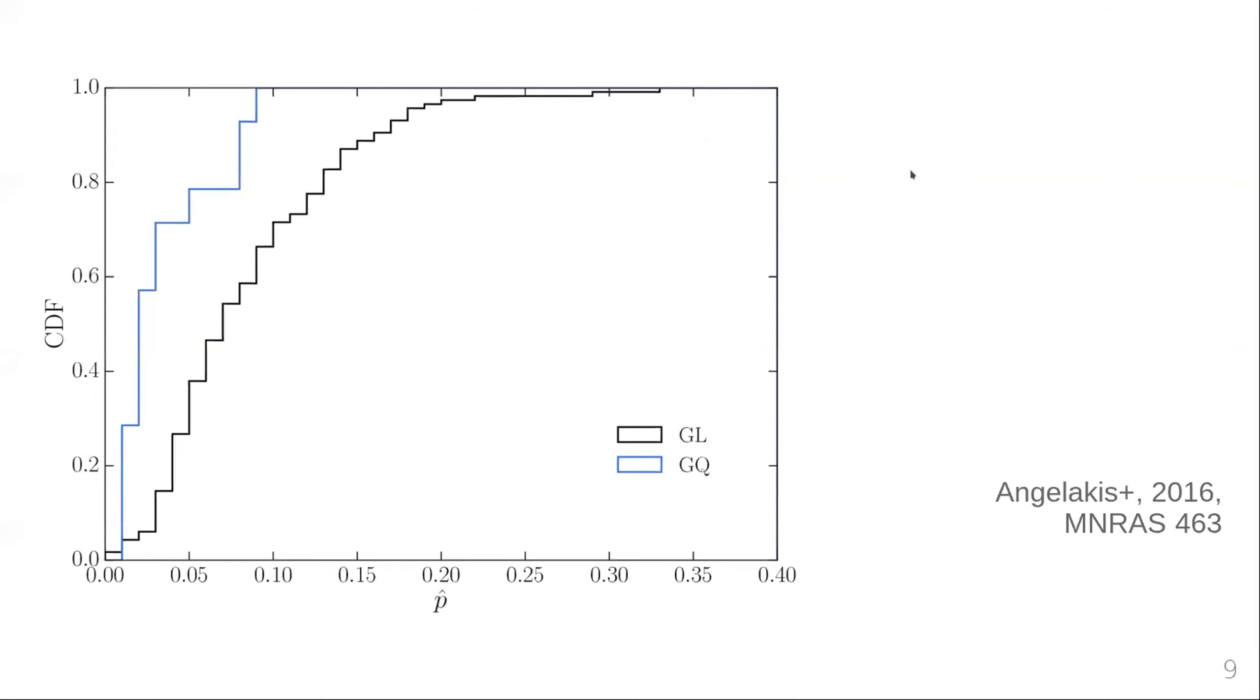I want to point out two main results from the AGN monitoring campaign that relates to rotations or optical polarization in general and gamma ray activity. Here you can see the distribution over our monitored sources of the average polarization fraction for gamma ray loud sources and gamma ray quiet. This shows that gamma ray loud sources are significantly more polarized than gamma ray quiet ones, which provides first evidence that there is a link between the gamma ray and optical emission processes.